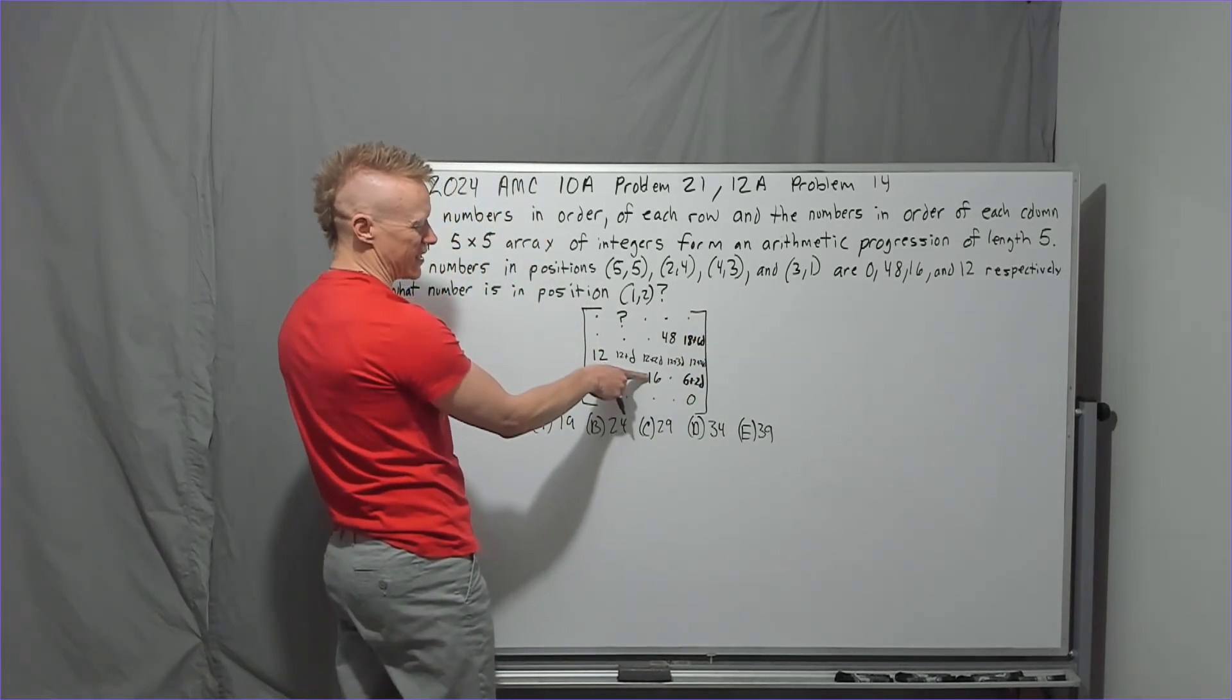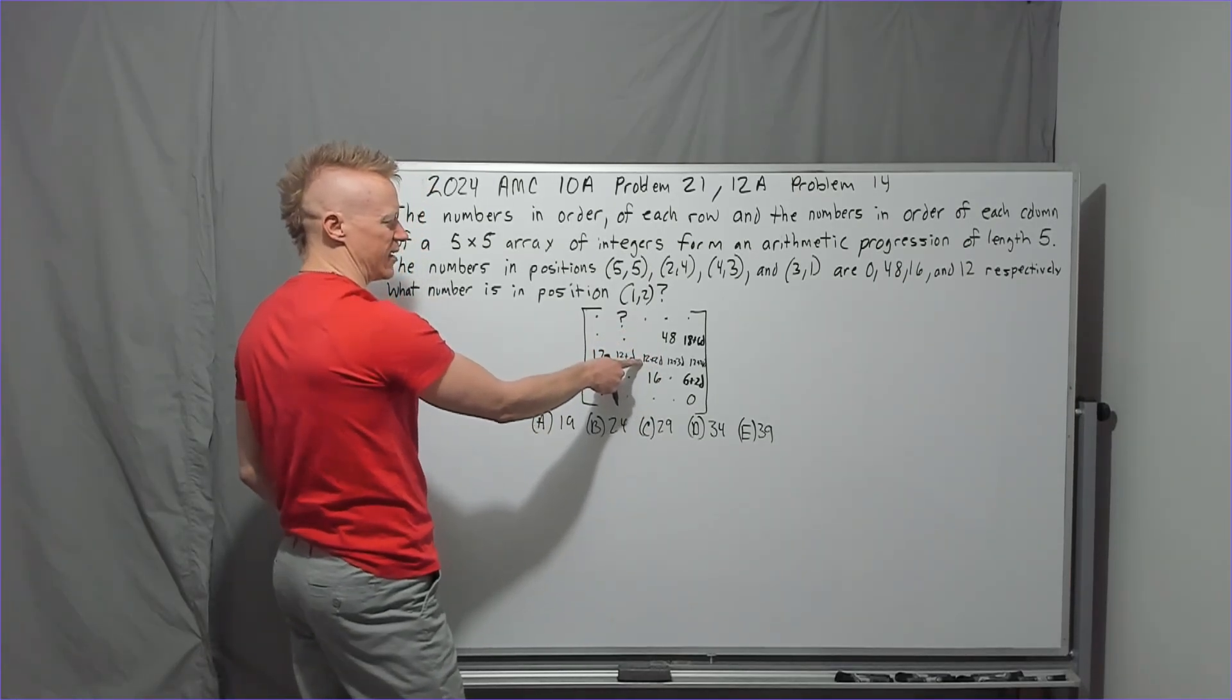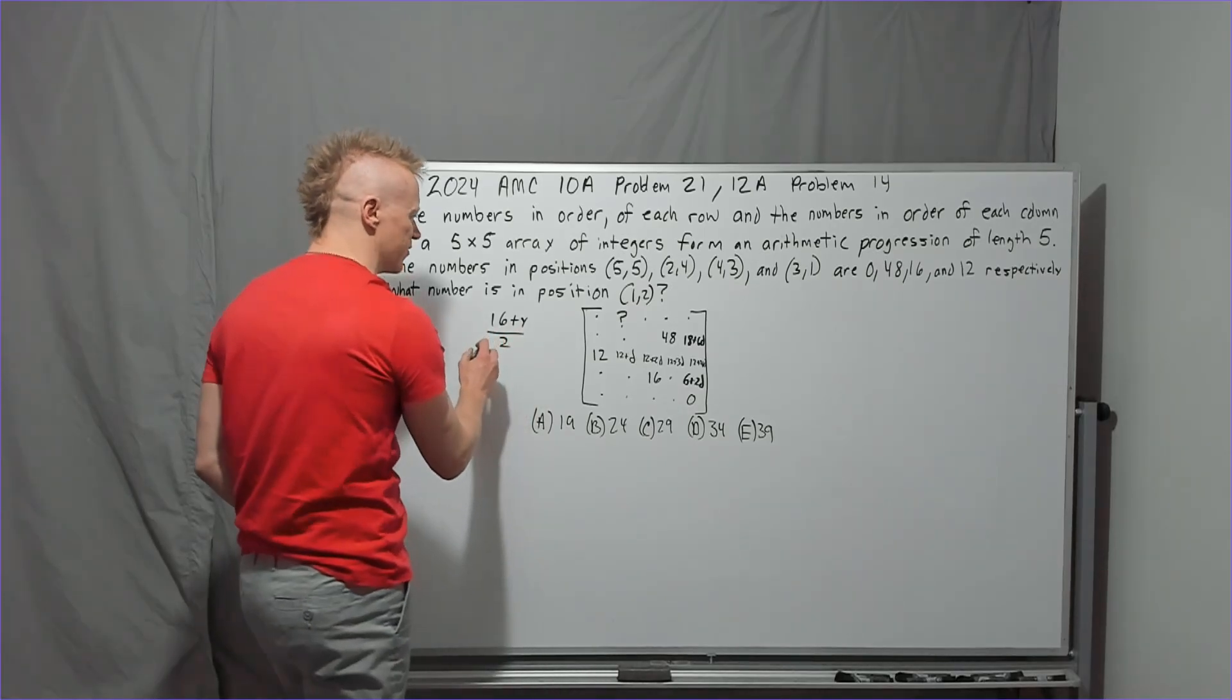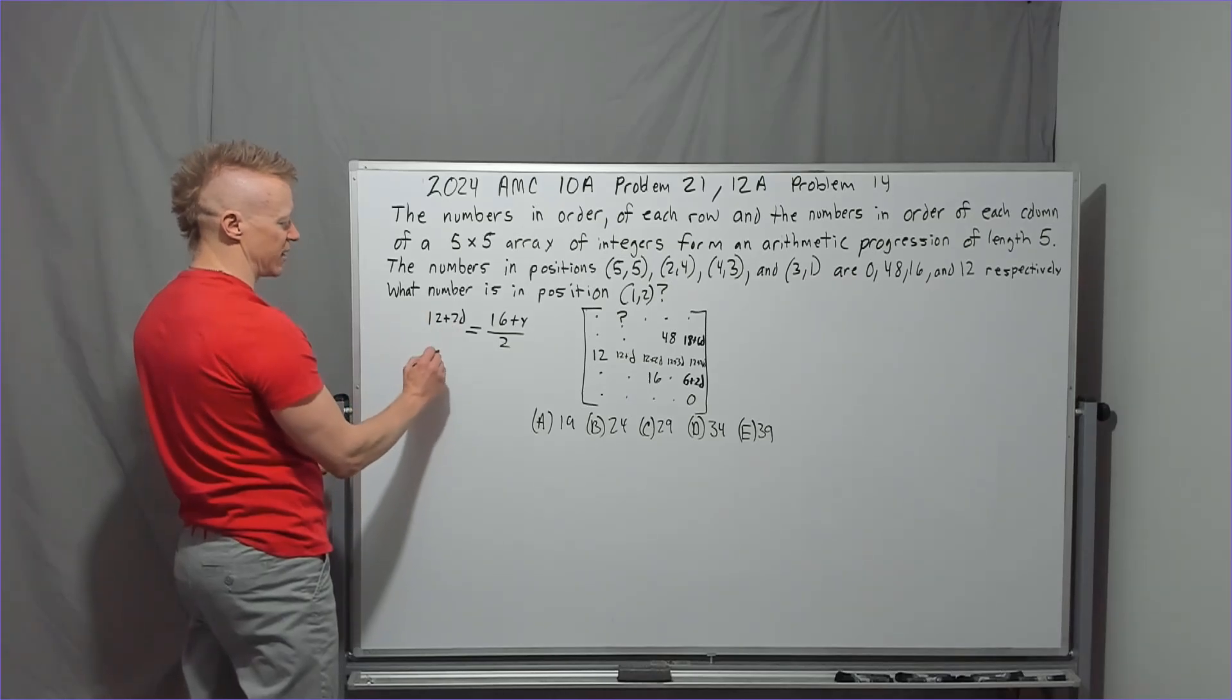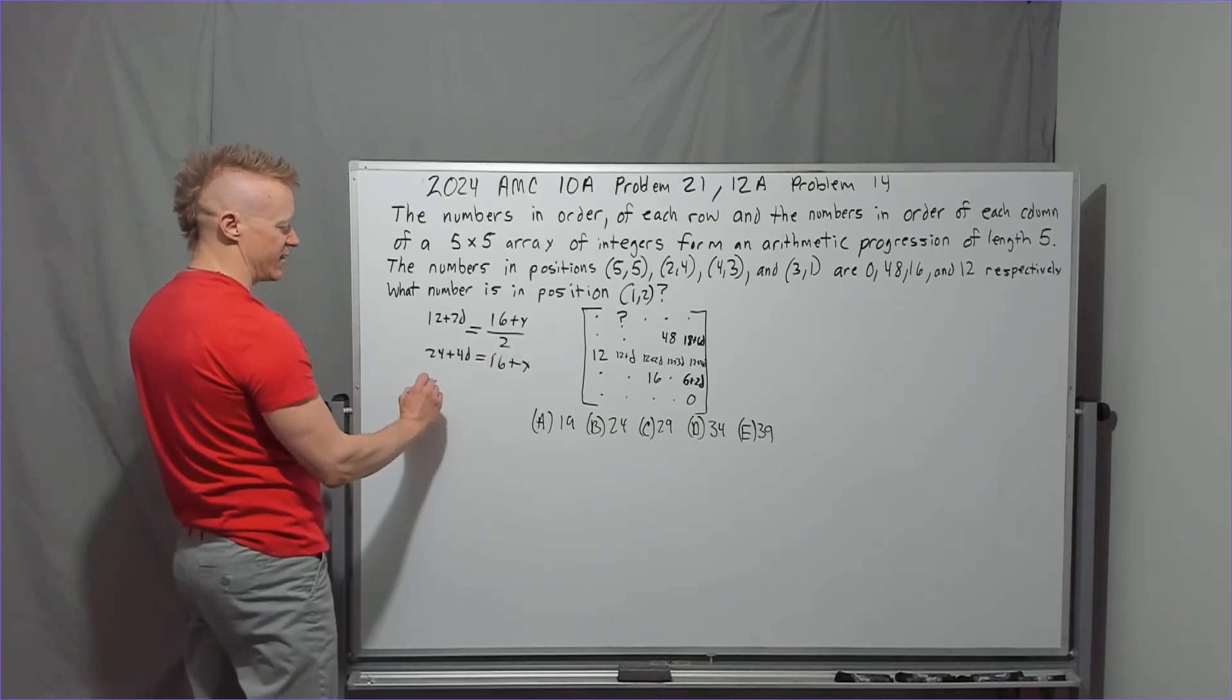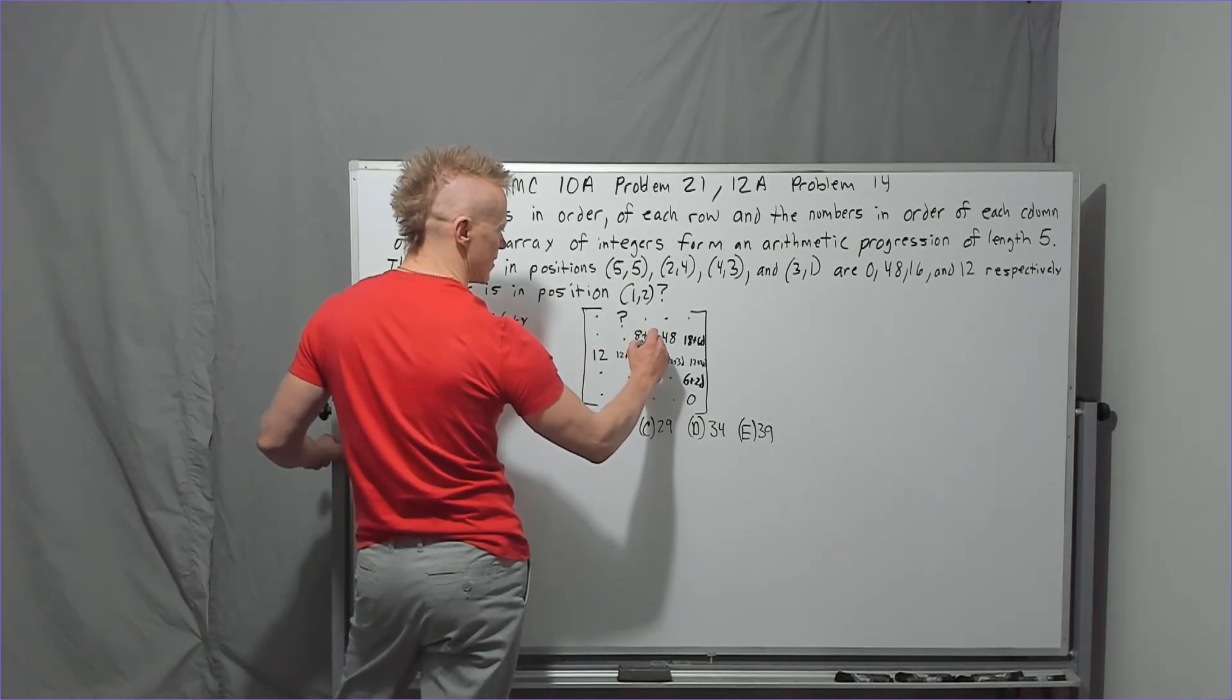See, this number right here and 16 have to have an average of 12 plus 2D, so why don't we go ahead and work that way? We'll call it Y for a second. 16 plus Y over 2 needs to equal 12 plus 2D. Multiply by 2, 24 plus 4D equals 16 plus Y. Y, then, that unknown value is going to be 8 plus 4D. So this right here is 8 plus 4D.